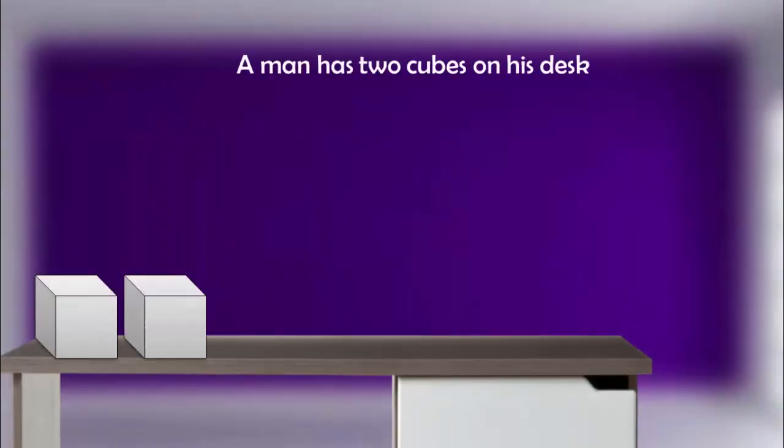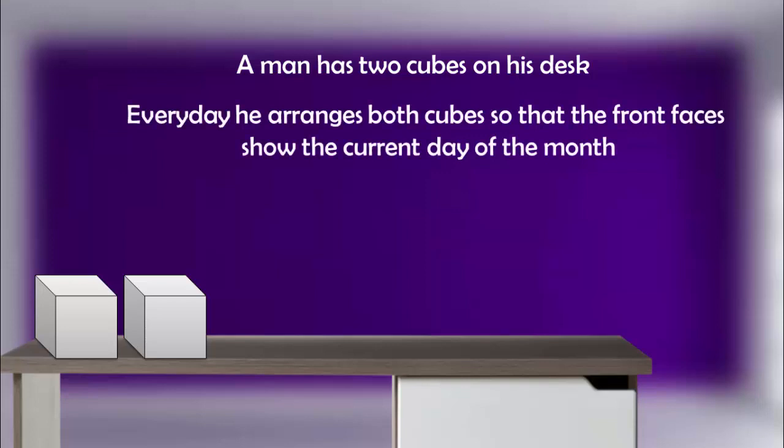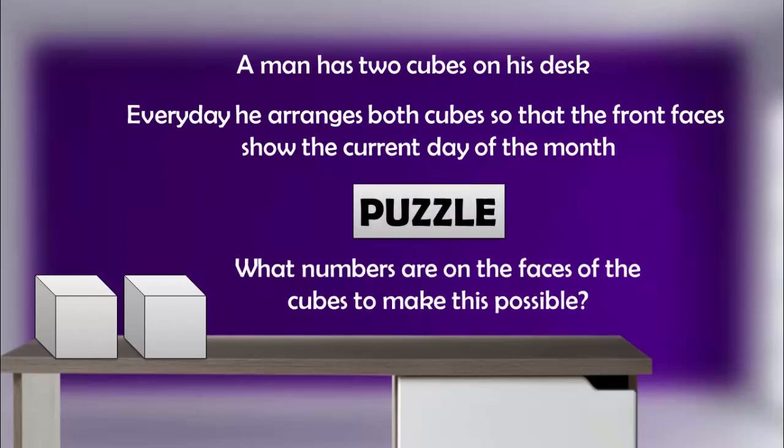A man has two cubes on his desk. Every day he arranges both cubes so that the front faces show the current day of the month. For example, the 15th of a month is shown as 1-5. What numbers are on the faces of the cubes to make this possible?